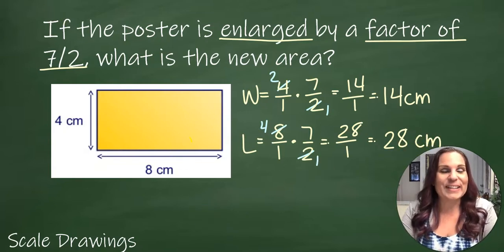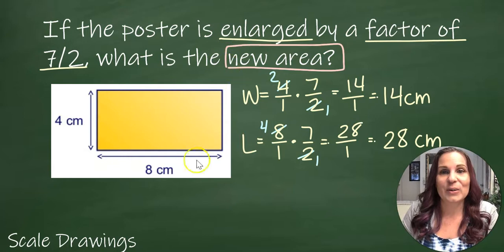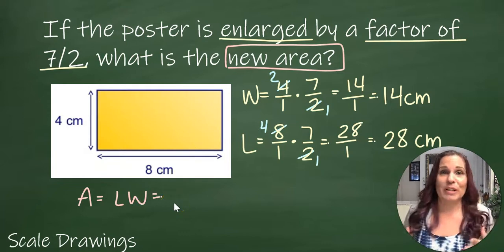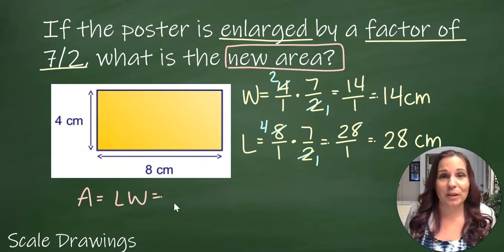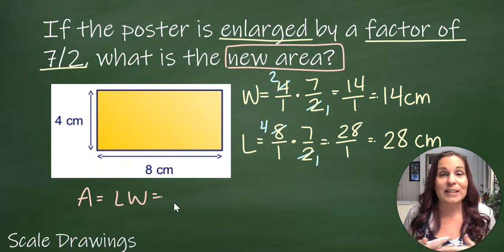But we're not done because in this problem we have to find the new area. Area is length times width. I don't like you to just memorize formulas and not really understand where they come from, so let me take a quick aside and explain why we do length times width when finding area.